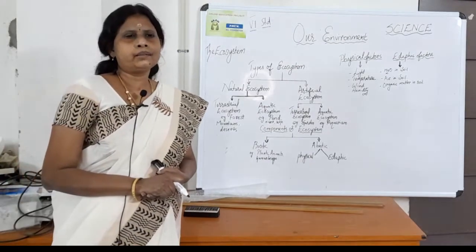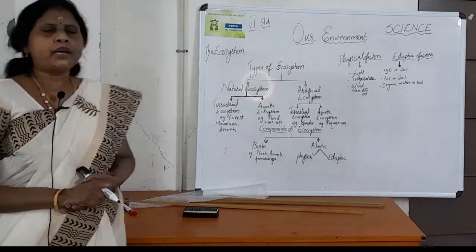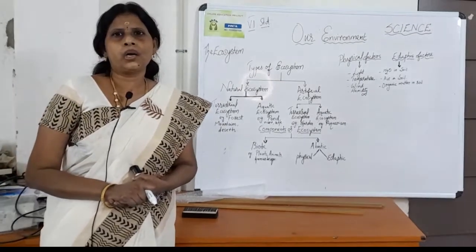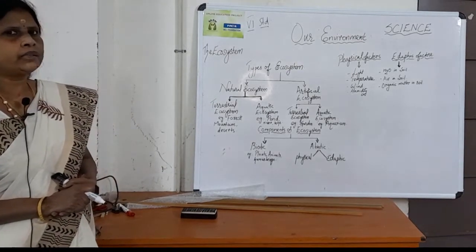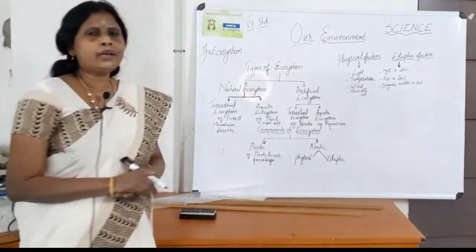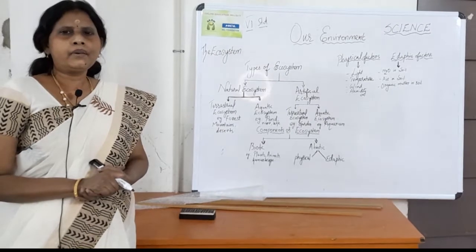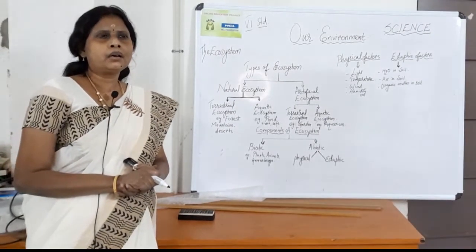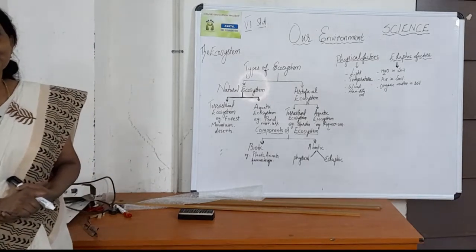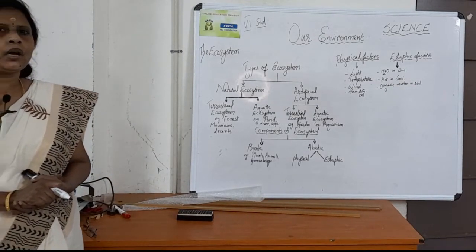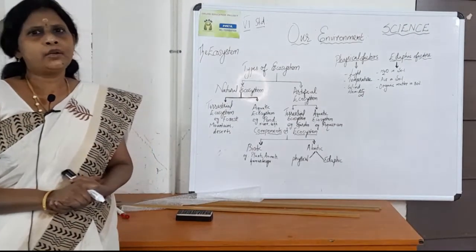So many things surrounding us are collectively called the environment. In an environment there are so many things — they are living as well as non-living things. The living things or living organisms are called biotic factors, and the non-living things are called abiotic factors. The living as well as non-living things interact with each other. They adapt to changes in the environment. The living organisms are plants, animals, micro-organisms, and human beings.